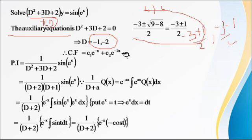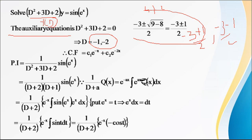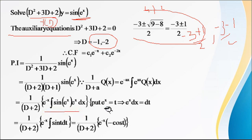Now find PI. PI equals 1 upon f(D) into sin(e raised to x), where f(D) is D squared plus 3D plus 2. We can write this as 1 upon (D plus 1) times 1 upon (D plus 2) of sin(e raised to x). Applying the formula 1 upon (D plus a) Q(x) equals e raised to minus ax times the integral of e raised to ax times Q(x) dx, with a equal to 1, we get e raised to minus x times the integral of e raised to x times sin(e raised to x) dx.